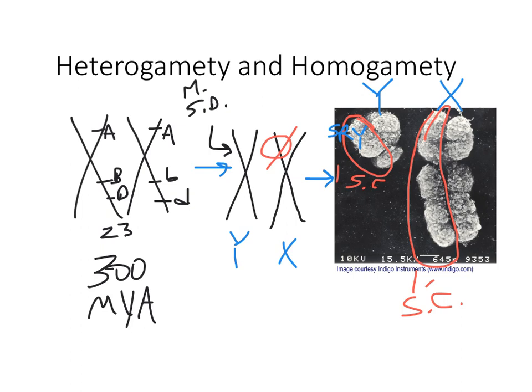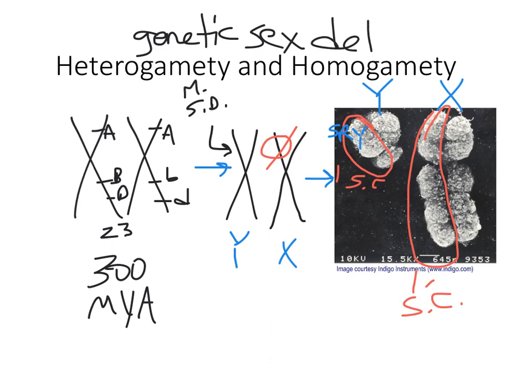A student asked: before we had a gene that controlled sex, what happened? That's an important point — heterogamety and homogamety are forms of genetic sex determination, but it's not the only way animals and plants do sex determination. In other words, we use a gene to trigger sexual development, but some species don't.